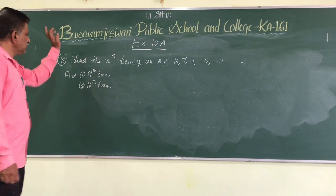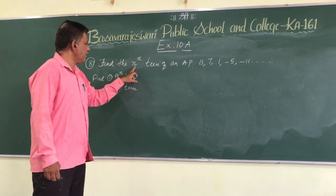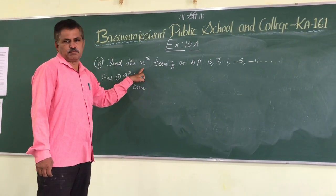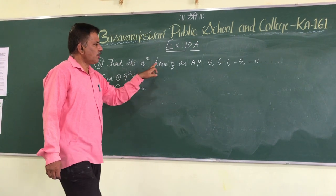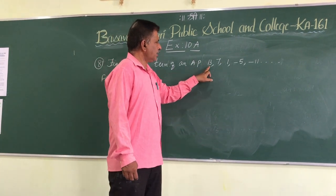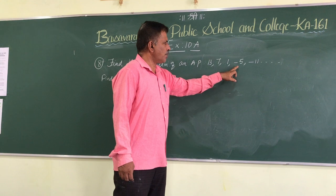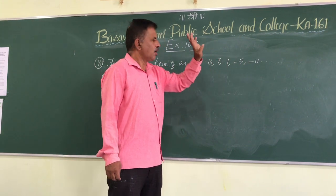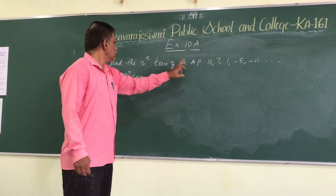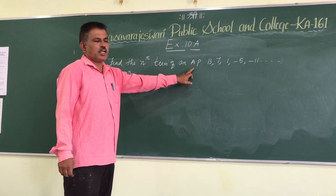The 8th question asks you to find the nth term of the AP: 13, 7, 1, -5, -11. He has already told that you have to find the nth term of an arithmetic progression.